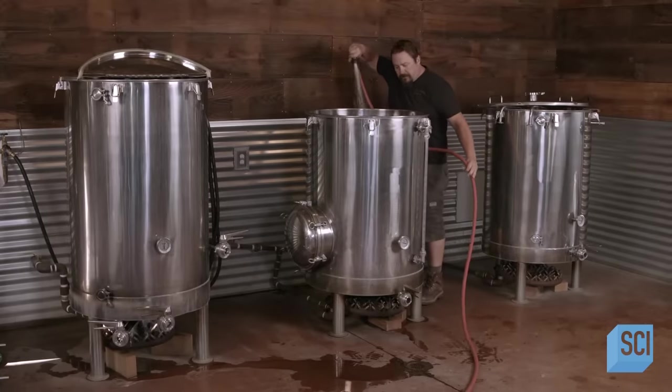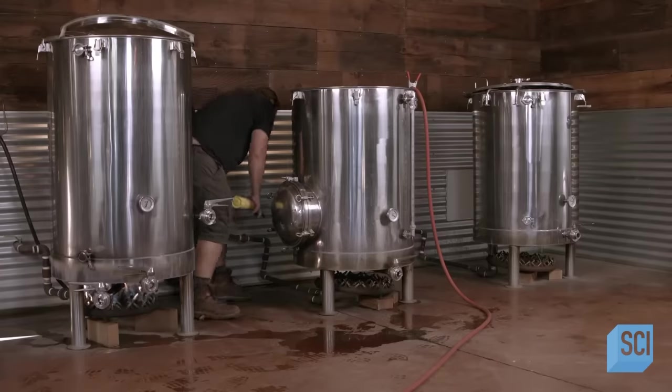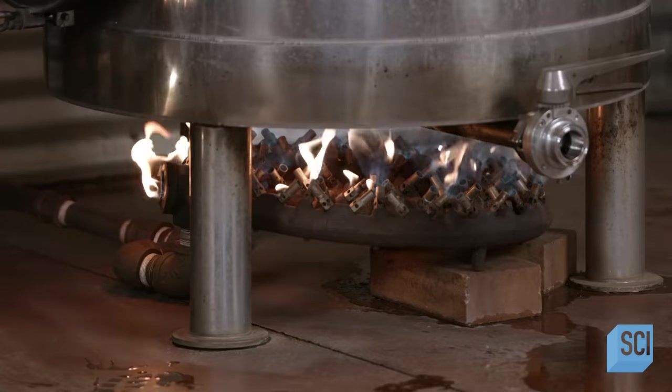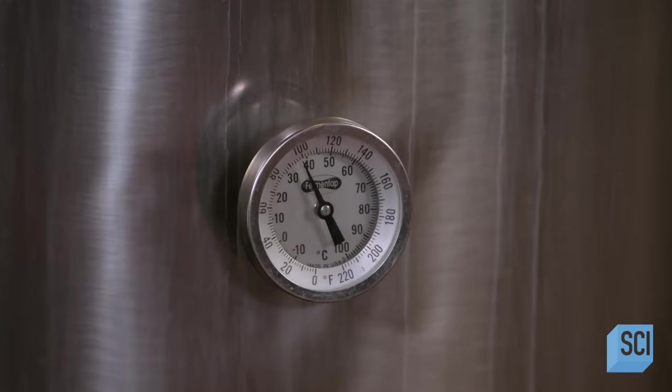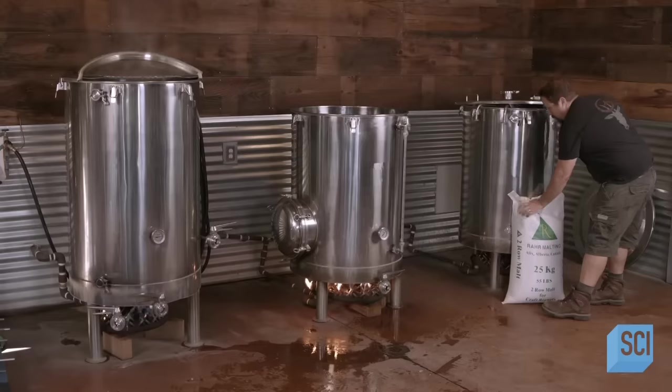To begin the beer-making process, the brewmaster fills a tank, called a mash tun, with water, then ignites a burner. When the water heats to around 150 degrees Fahrenheit, he pours in a blend of different types of malts.